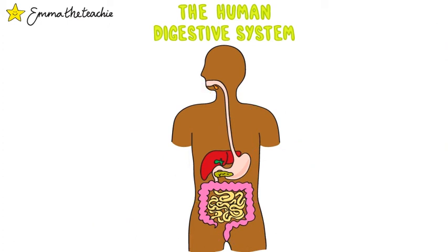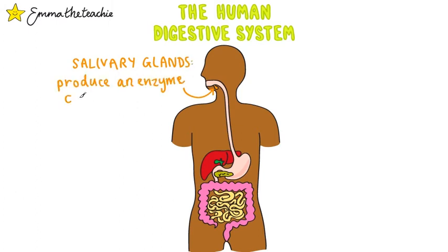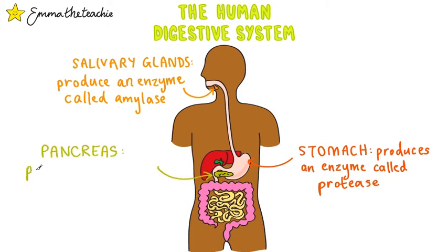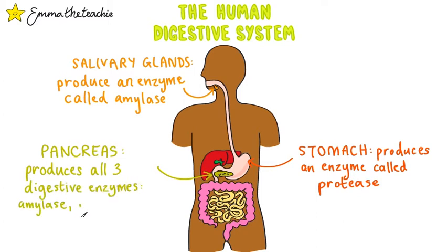Now we're going to add the new bits that you need to know for GCSE level. We mentioned the salivary glands produce saliva, but they also produce a digestive enzyme called amylase. The stomach also produces a digestive enzyme called protease. We've also got a new organ — the pancreas — which is a small organ that produces all three digestive enzymes: amylase, protease, and lipase.